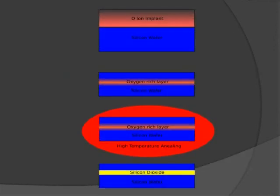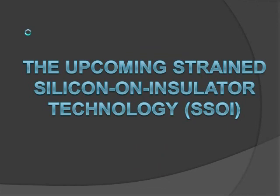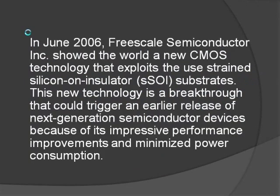The next diagram shows the SIMOX technique procedure. In June 2006, Freescale Semiconductor Incorporated showed the world a new CMOS technology that exploits the use of strained silicon on insulator as SOI substrates. This new technology is a breakthrough that could trigger an earlier release of next-generation semiconductor devices.